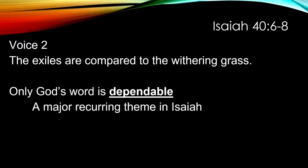This message from God compares the exiles to withering grass and has to do with dependability. We're talking about the nature of God in this section. You might think that a God who allowed his people to be taken into captivity and allowed the temple to be destroyed is not very dependable — but we need to get that right. It's the people who were undependable. The people were not dependable, but God is dependable. When God promises restoration, that restoration is sure — it's going to happen. God's word is dependable, and that is a major recurring theme.